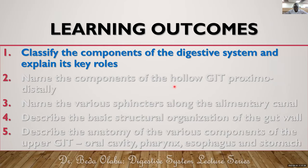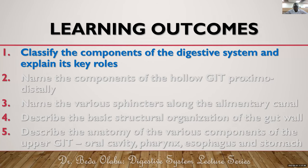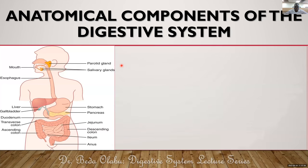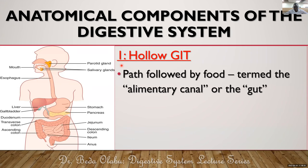The anatomical components of the digestive system can be classified into two major groups. The first is the hollow GIT — the path followed by food from the mouth all the way to the anal canal. This is also called the alimentary canal or the gut.